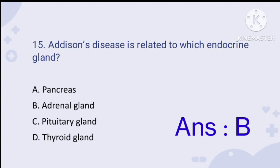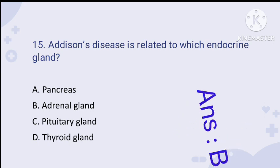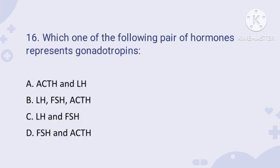Question number fifteen — very important: Addison's disease is related to which endocrine gland? Addison's disease is related to the adrenal gland. The answer is option B.